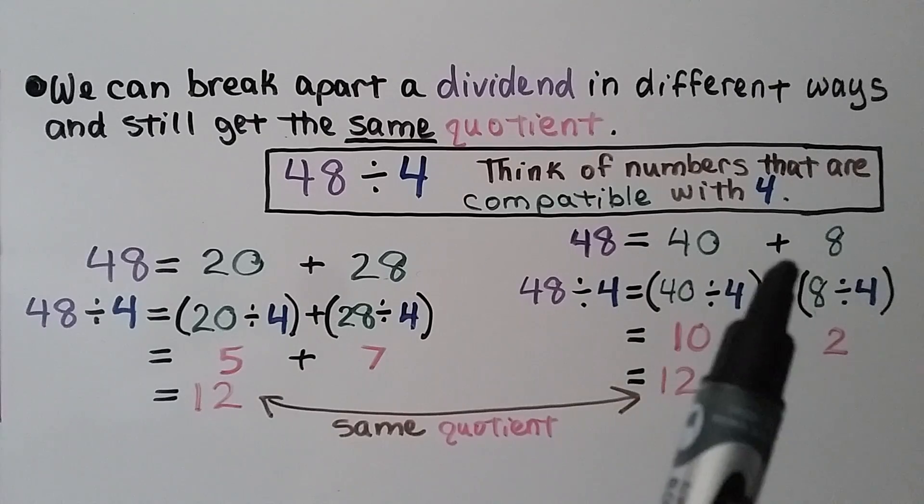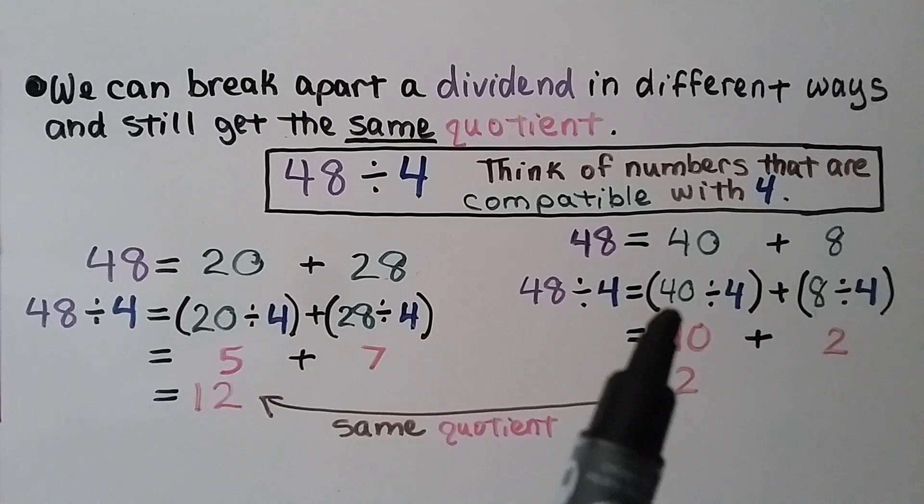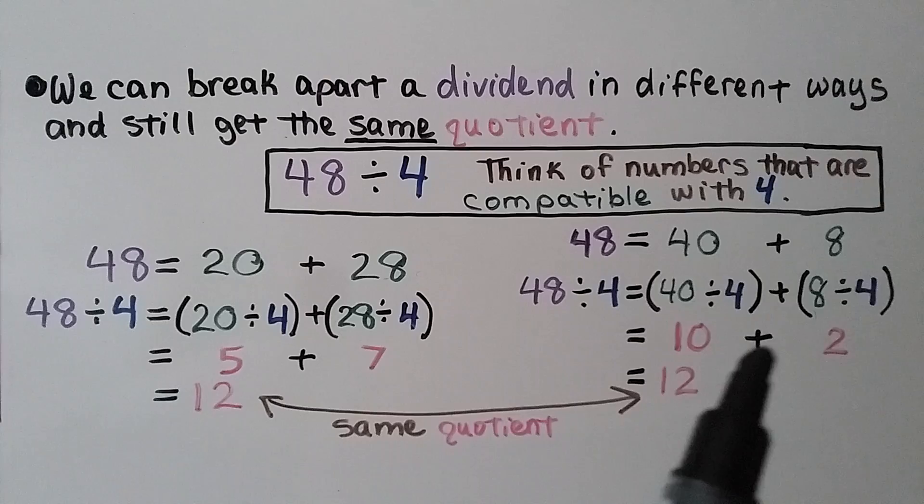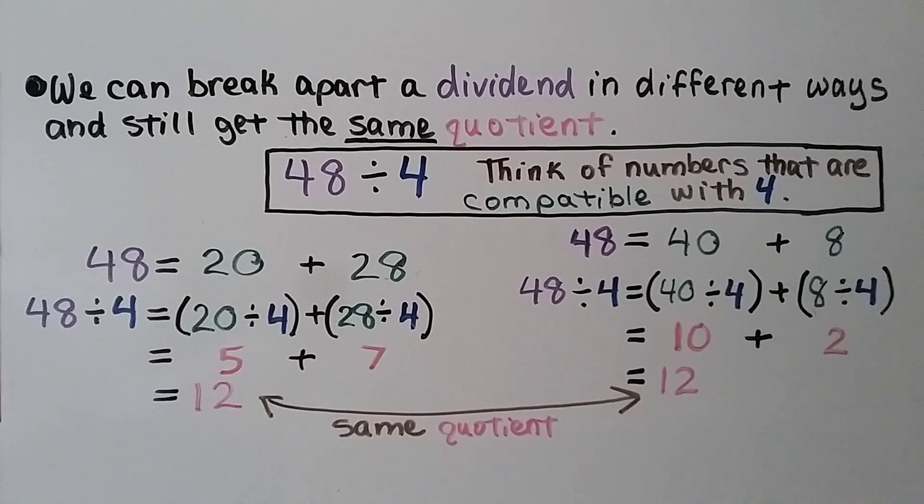And if we had used 40 plus 8 for our addends, we still would have had a 10 plus a 2, which equals 12. So it doesn't matter how we break apart the dividend in different ways. We'll still get the same quotient if they're compatible with the divisor.